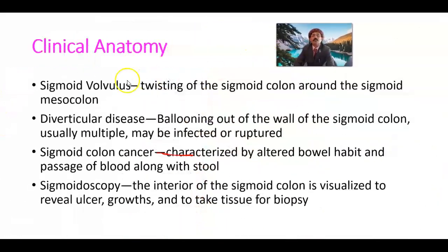Sigmoid clinical anatomy: sigmoid volvulus is the twisting of the sigmoid colon around the sigmoid mesocolon. This may happen especially if there is a heavy mass in the sigmoid colon and the sigmoid mesocolon and sigmoid colon are very long, so the attachment may be short while the length is very long. In that condition we may have sigmoid volvulus. This is an emergency leading to intestinal obstruction and needs surgery to repair.